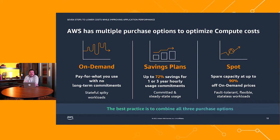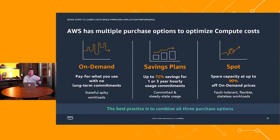Near and dear to my heart, one of the most powerful tools to optimize overall compute costs is spot instances. Spot instances are our spare capacity, available at up to 90% discount over on-demand pricing. The reason we can deliver that significant discount is that spot instances can be interrupted when we need to return them to on-demand or savings plans customers. So it's great for fault-tolerant, flexible workloads. When a good spot customer gets interrupted, they might automatically replace an M6 large with an M6i large — that's what it means to be flexible and fault-tolerant.